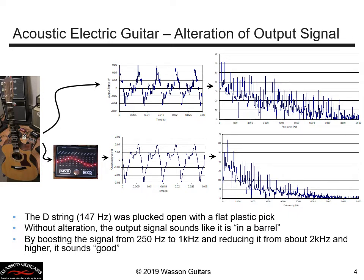If I modify the output of this guitar using the equalizer pedal, I boost the signal from 250 Hz to 1000 Hz and reduce it above 2000 Hz. I've added some of the lower harmonic content and drastically reduced the higher-frequency noise. The signal looks very different, and now it sounds more pleasing to me — it actually sounds more like what the instrument sounds like acoustically.